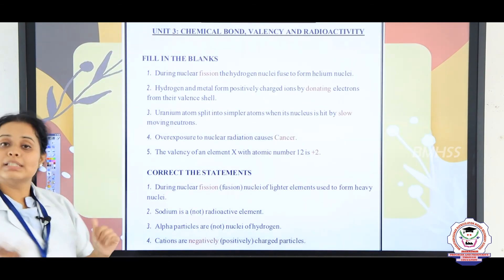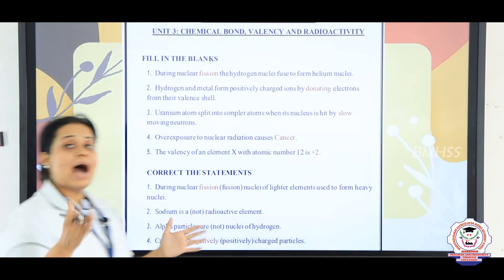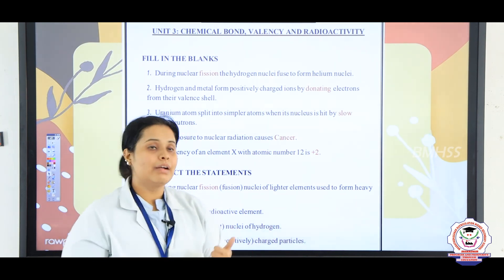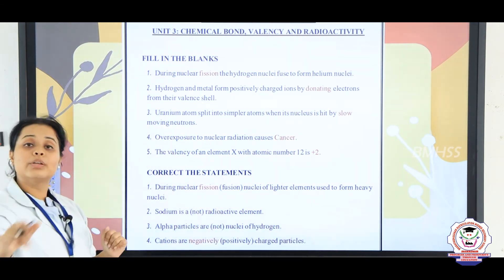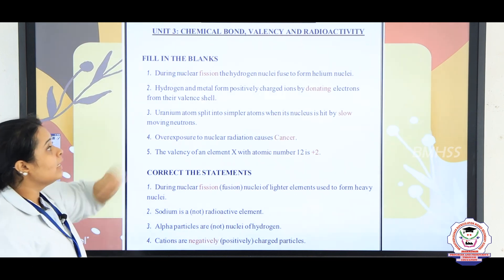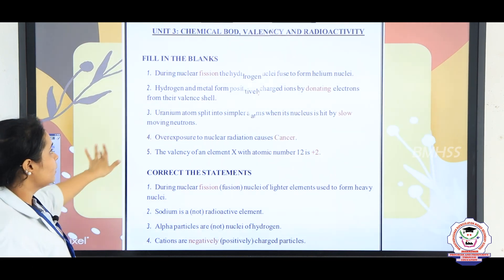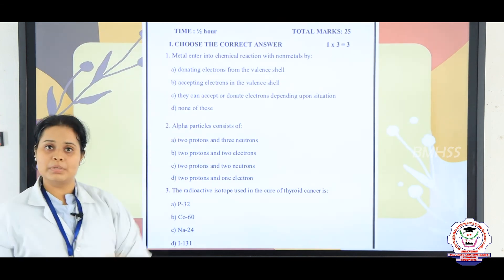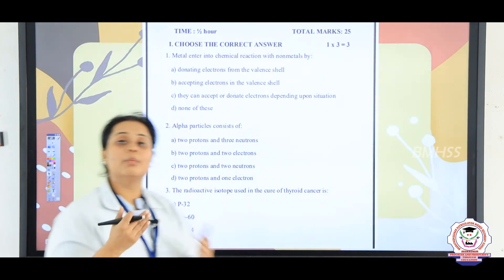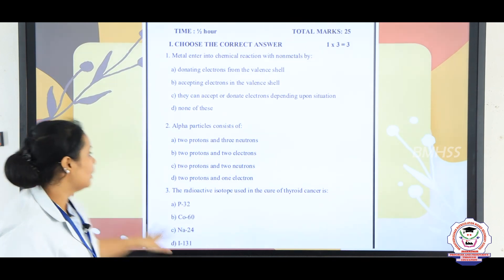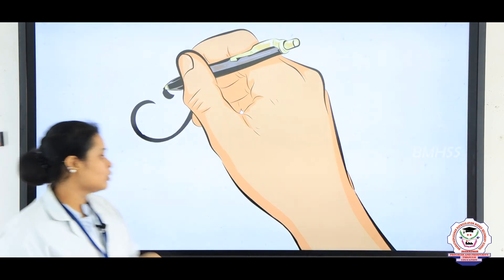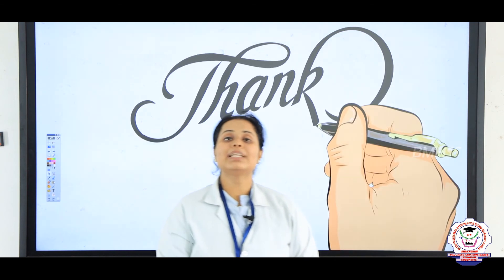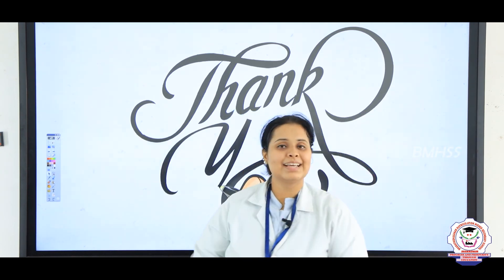Students, in this lesson we have discussed about how the valencies occur and what is a radical. When you go into the description box, you can see study material, a question bank for your reference, and the self-assessment. Self-assessment will tell you how much you have understood the lesson. I hope you have enjoyed the session. Until we meet next time with a better video, bye-bye.